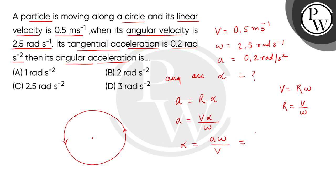Putting in the values: alpha equals 0.2 times 2.5 divided by 0.5. We can see that 0.5 cancels out 5 times, so this equals 1 radian per second square.